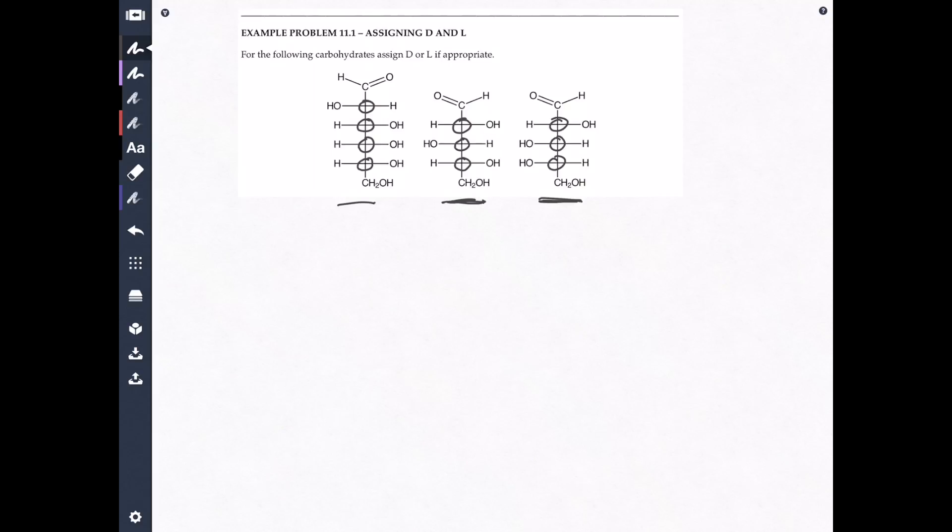Now that we've located them, what do we do with them? That's probably the next question, right? So, when you're doing a question that asks you to assign D versus L, you don't have to look at all the chiral carbons. You just have to find one of them.